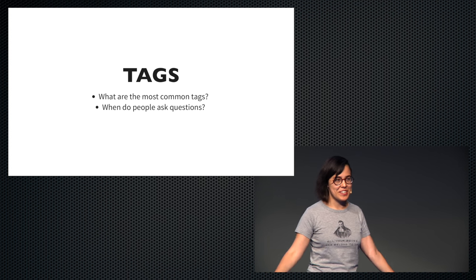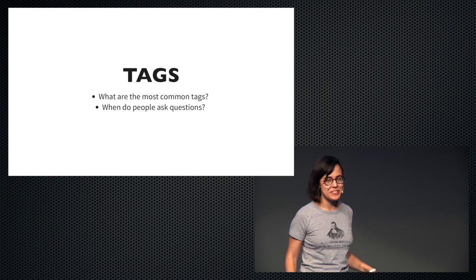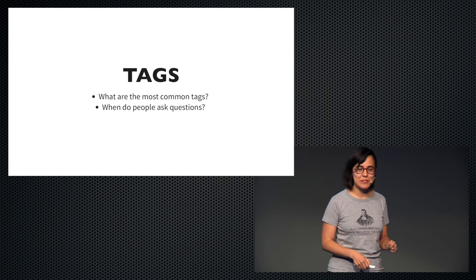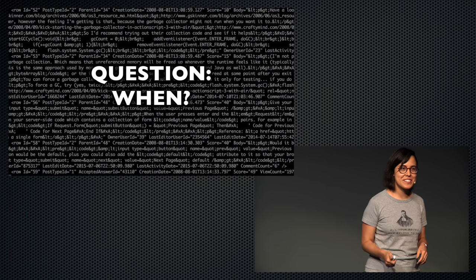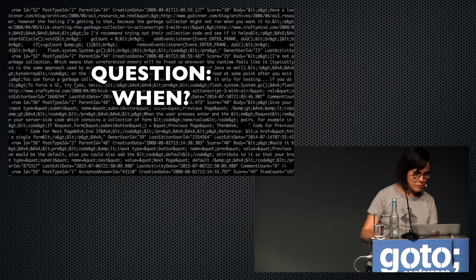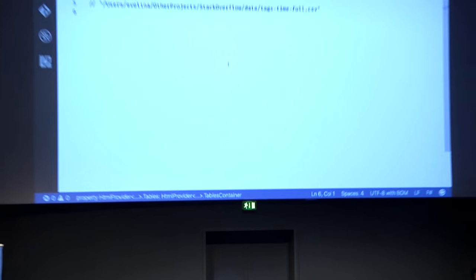Another interesting question: each post is tagged and also timestamped. So I can think — if I'm asking a question about R, when should I ask it on Stack Overflow so that most people see it? I decided to look at when people are asking questions. I have pre-processed some data here in a CSV file — that's my go-to format. And I want to show you something very cool in F# called type providers.